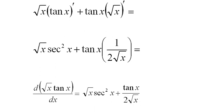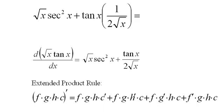The extended product rule is here. Now I have it as four functions, f of x times g of x times h of x times c of x, four functions.